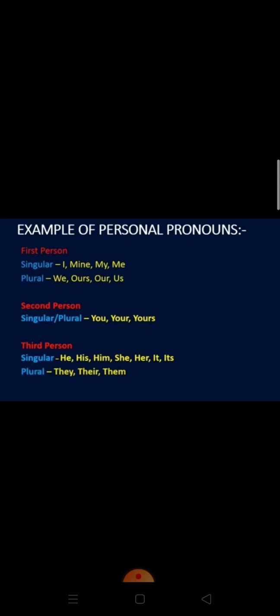First person is I and we. The singular is I and the plural is we. The cases are: I, me, my and mine. For the plural 'we', the cases are ours, our and us. Second person is 'you' — used as both singular and plural. Its cases are you, your and yours. Coming to the third person singular: he, him; she, her; it, its. And the plural is they, their, them.